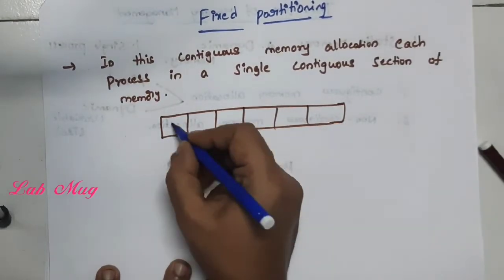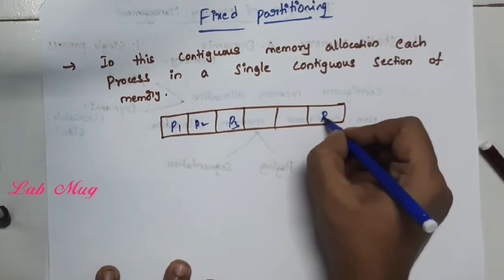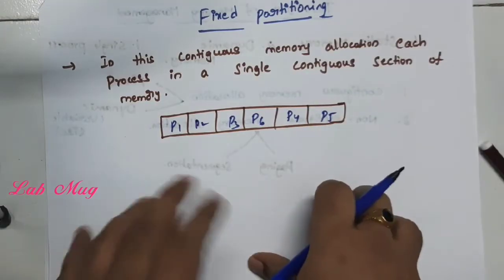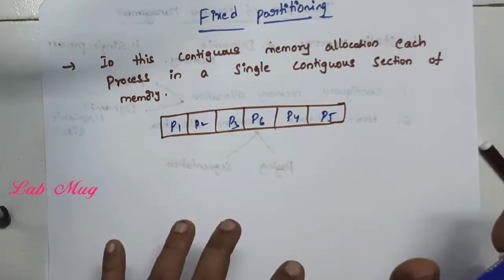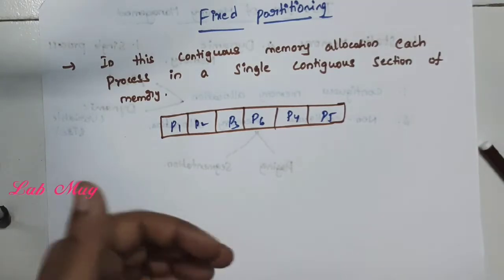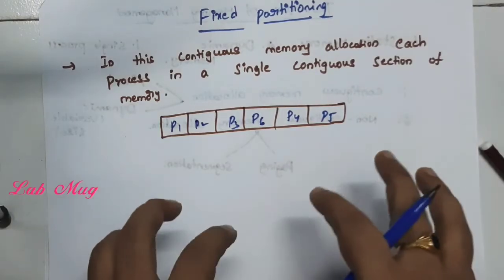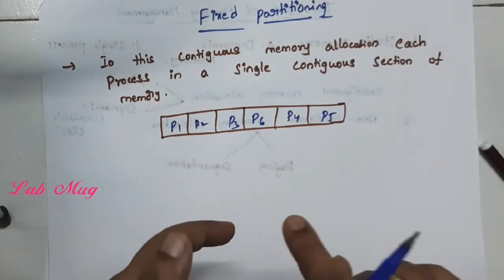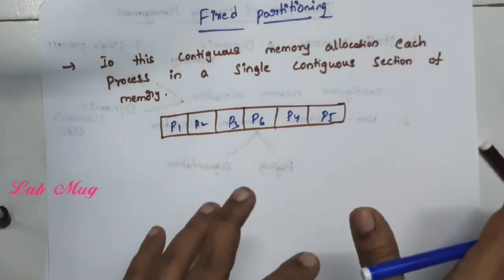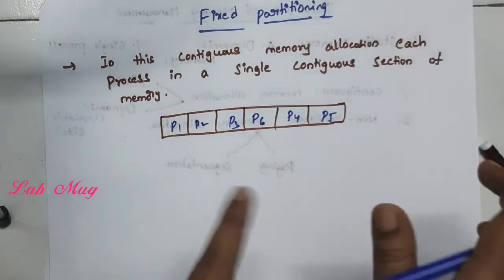For example, consider processes P1, P2, P3, P4, P5, P6. For different processors, one process may first execute, another may be allocated second. Depending on the job and timing, memory access is shared accordingly. But here we are choosing continuous memory allocation.